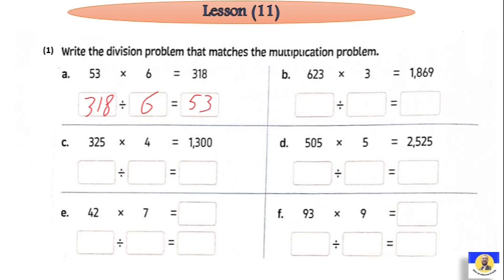Again, we have 623 by 3 equals 1,869. I'm going to make 1,869 first. Of course, the number is called a dividend. What is it? Dividend. We are going to enter with us 3. We have the answer that is 623.